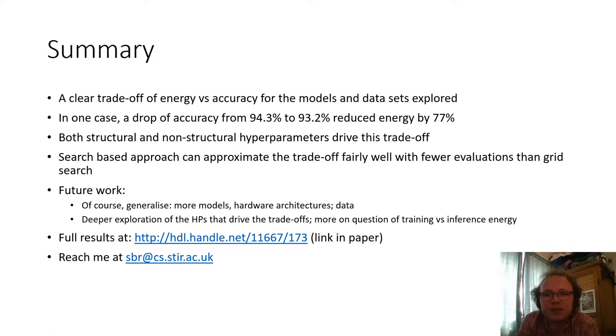So to briefly summarize, we've identified that there was a clear trade off of energy versus accuracy, at least for the models and the data sets that we explored. And you might exploit that in one case by dropping only about a percent in terms of accuracy to save over three quarters of the energy consumption. We found that both structural and non-structural hyperparameters drive this trade off. So as well as things like hidden layer size, the training algorithm, the activation functions, these all make some kind of an impact on the trade off. We showed that a search based approach like NSGA2 can approximate this trade off fairly well with far fewer evaluations than the grid search. And of course, there is plenty more to do.